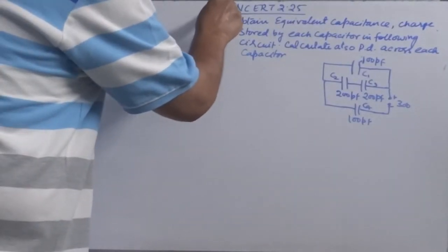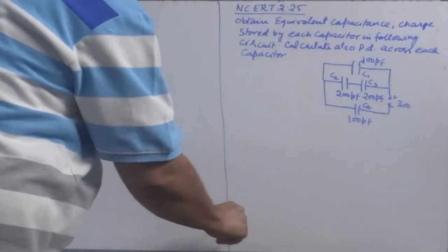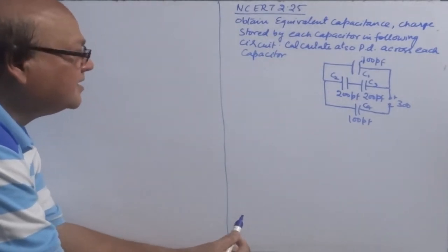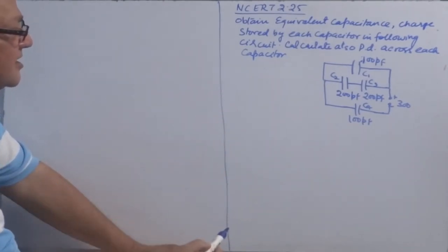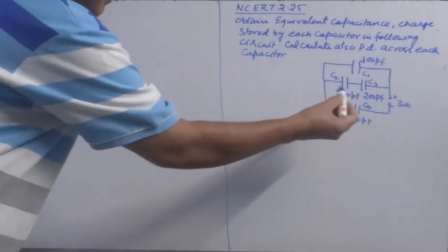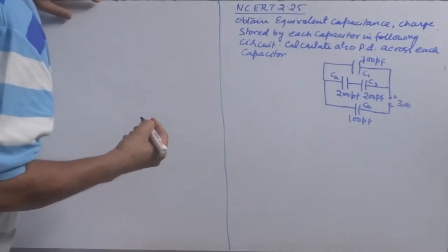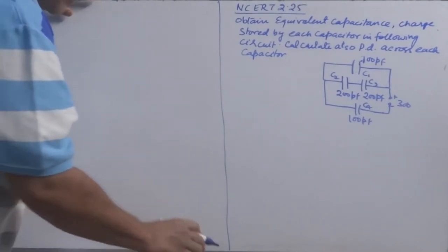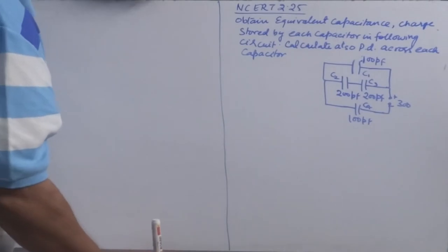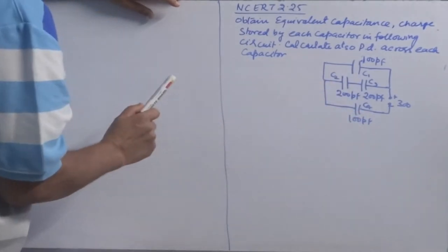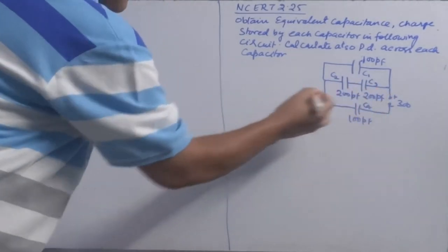Across these two points you have 100 volts. There are 100 picofarad capacitors C1 and C2 in parallel, so they will equally divide the voltage. C1 and this arm will have the same potential difference because these are in parallel. C1 carries 100 V, and the two capacitors C2 and C3 are in series, so V2 equals 50 volt and V3 equals 50 volt.